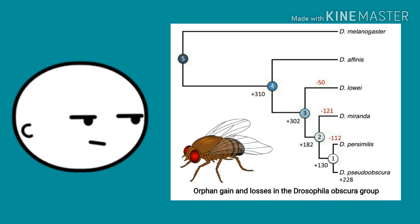When we clearly have organisms that don't share orphan genes that can bring forth offspring, and according to creationists, if you are able to bring forth offspring, then you should be the same kind. So I'll get on to the questions now.